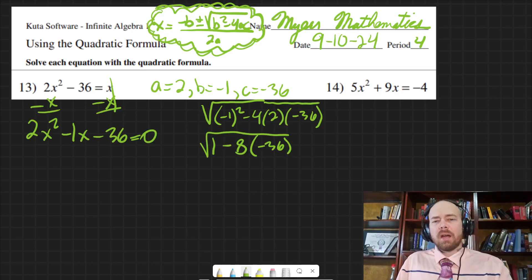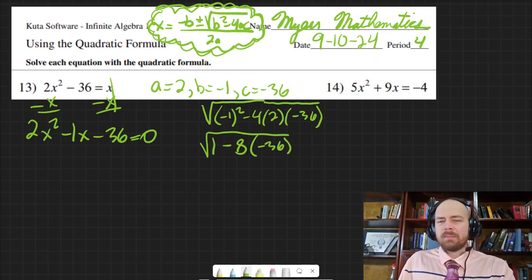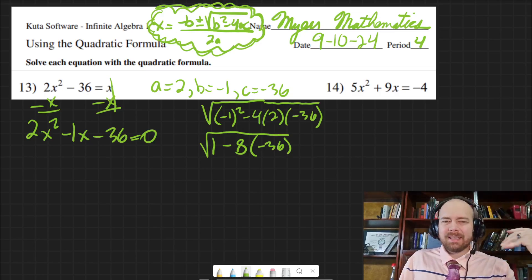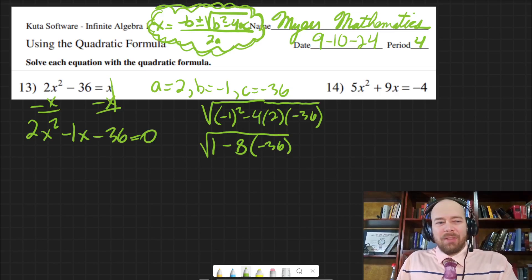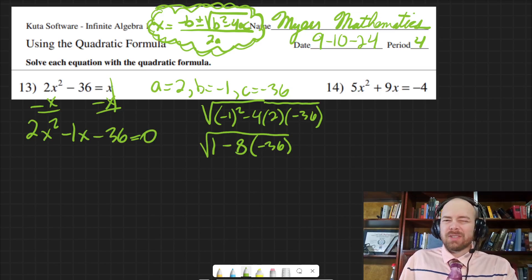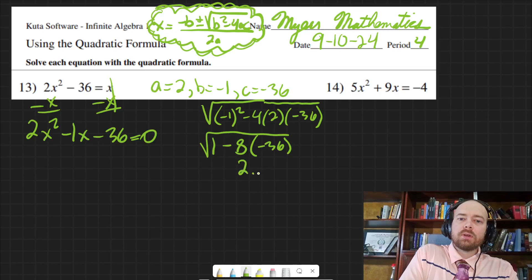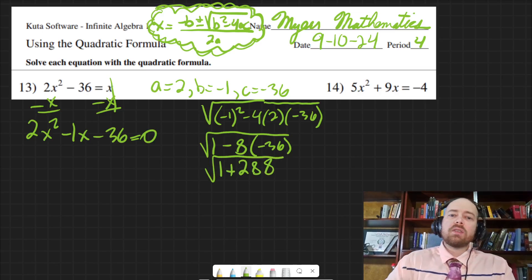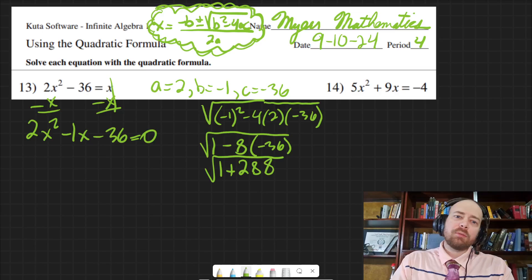Eight times 36. A trick to that is if you don't know what a multiple is in your head from memorizing it from a multiplication chart, like eight and 36, what you can do is you can just double it three times. That's usually what I do for larger numbers multiplied by eight. So if I double 36, that would be 72. Then if I double it again, that would be 144. And then if I double it again, that would be 288. So 288. And that's now positive.